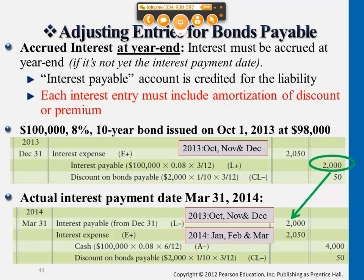We still have the interest payable account, interest expense, and discount on bonds payable. But interest payable will be $100,000 times 8% times 2/12. We're also changing discount on bonds payable — the discount of $2,000 spread along 10 years is the same, but we're only accounting for two months over 12.